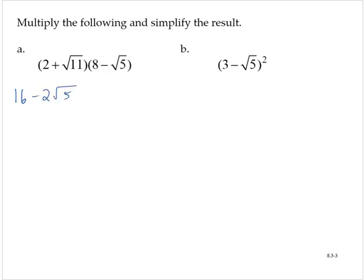Then we have the square root of 11 times 8, and so that would be plus 8 times the square root of 11. And then we have the square root of 11 times negative square root of 5, so minus the square root of 55.